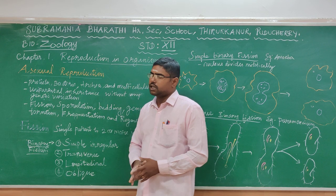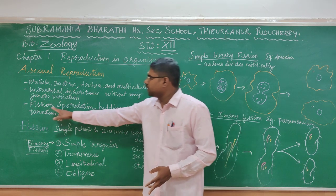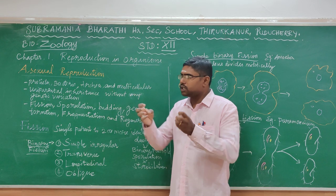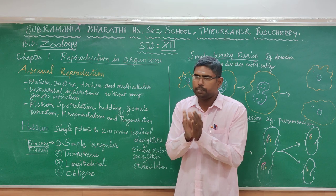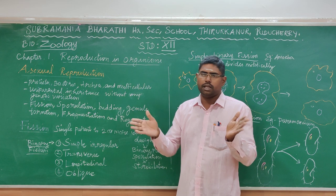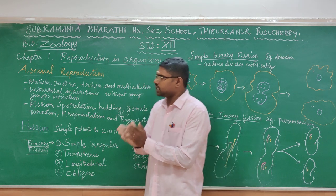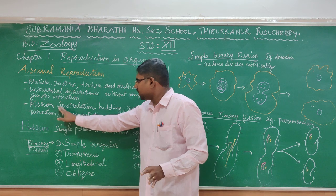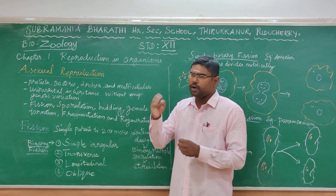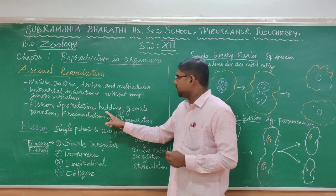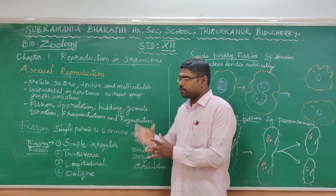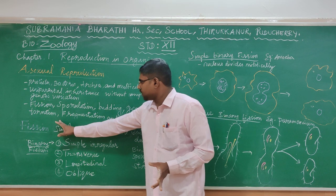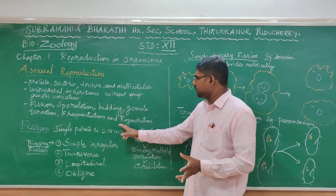The types of Asexual Reproduction, as we discussed: one is Fission — separation of individuals; then Sporulation — formation of spores; then Budding — a new individual formed from the same organism; then Gemmule formation; then Fragmentation; and Regeneration.